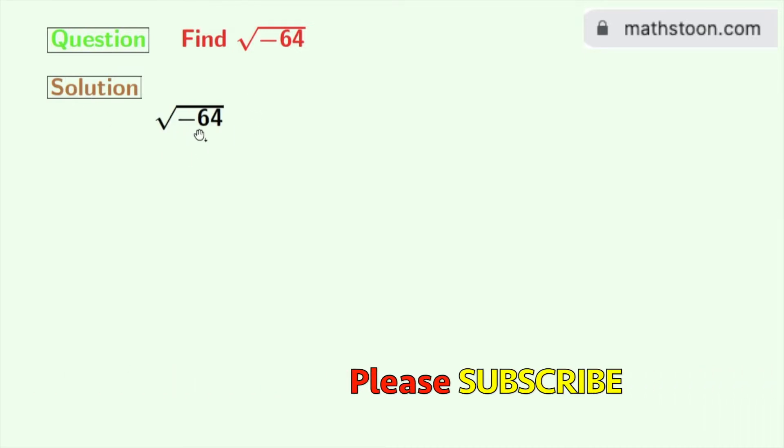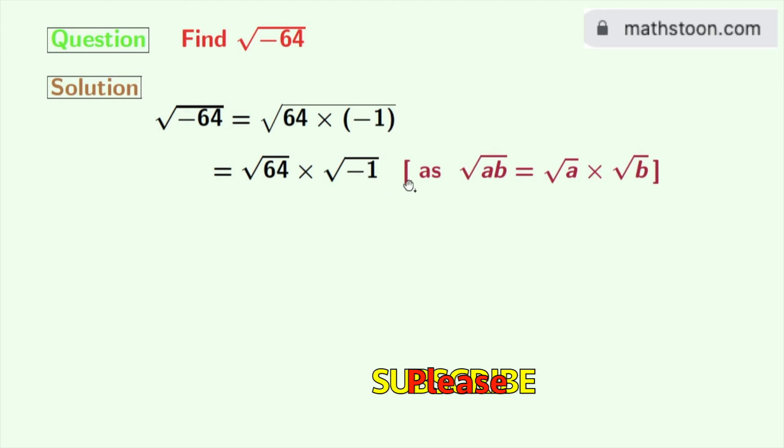Square root of minus 64 can be written as square root of 64 times minus 1. Now we will rewrite this as square root of 64 times square root of minus 1 using the rule of square root of ab is equal to square root of a times square root of b. Here a is 64 and b is minus 1.